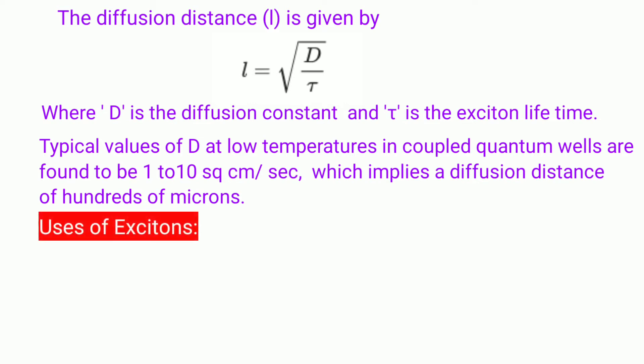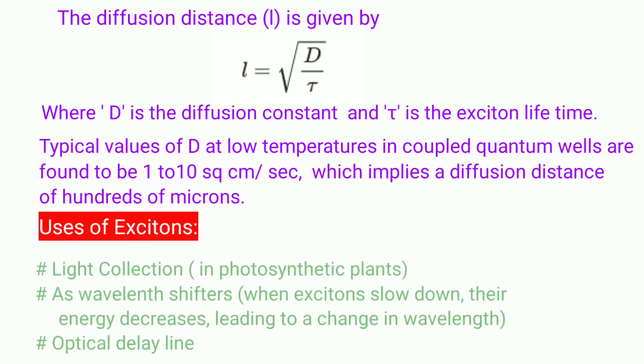Regarding the usage of excitons: they are used for light collection in photosynthetic plants and as wavelength shifters. As excitons slow down, their energy decreases, so E = hc/λ gives a change in wavelength with energy. They can also be used in optical delay lines.